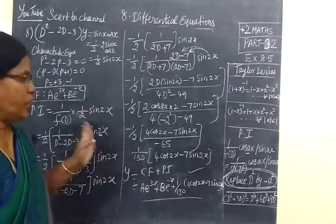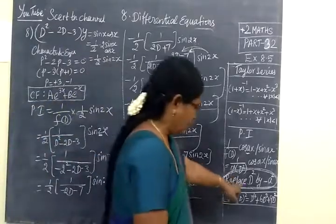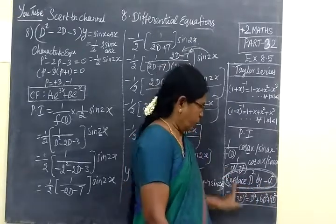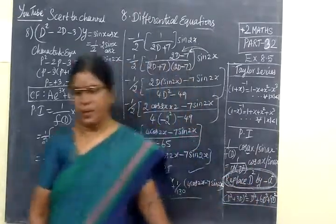This is a very simple sum, only thing you are finding D squared by minus a squared. Thank you.